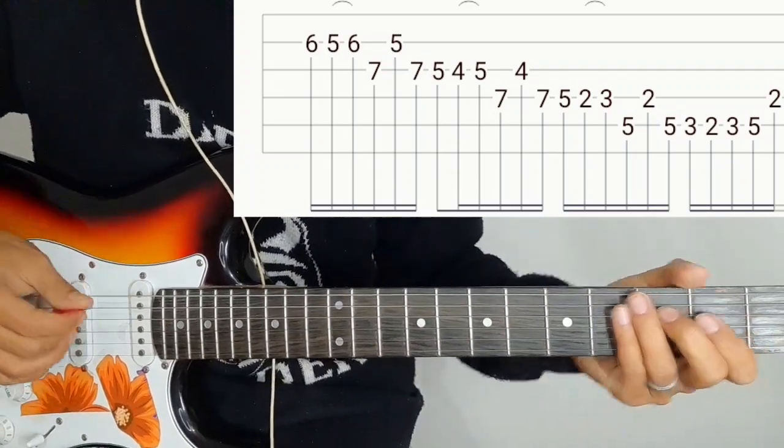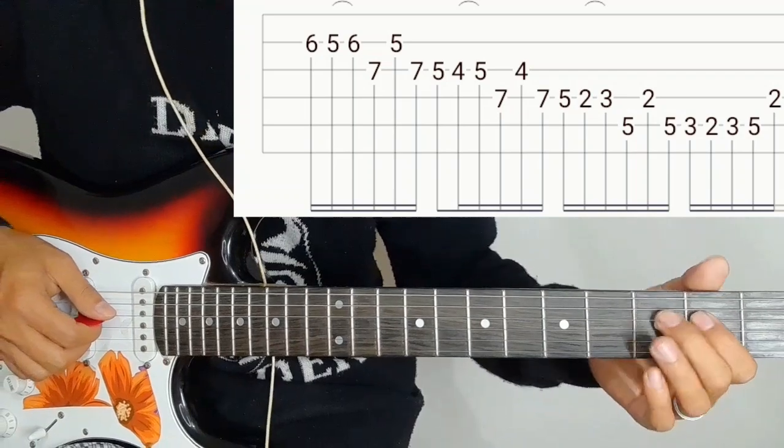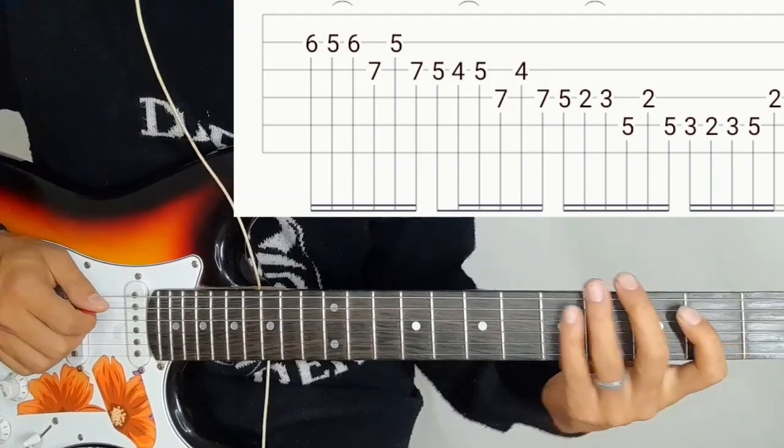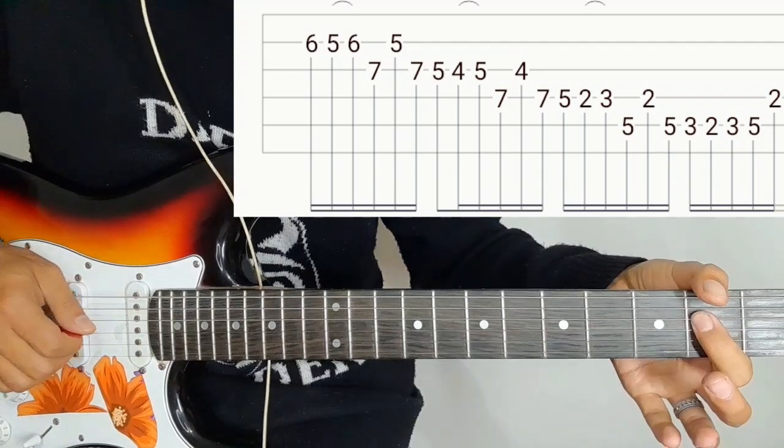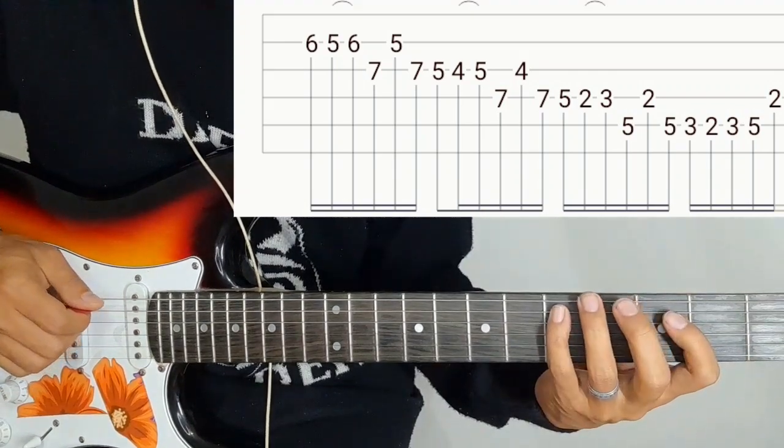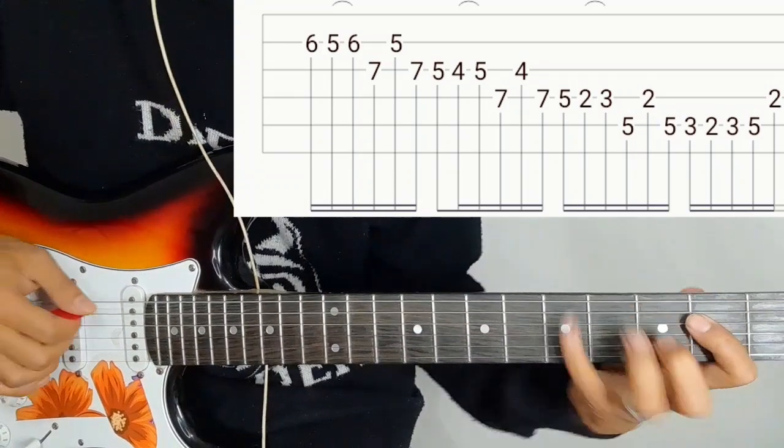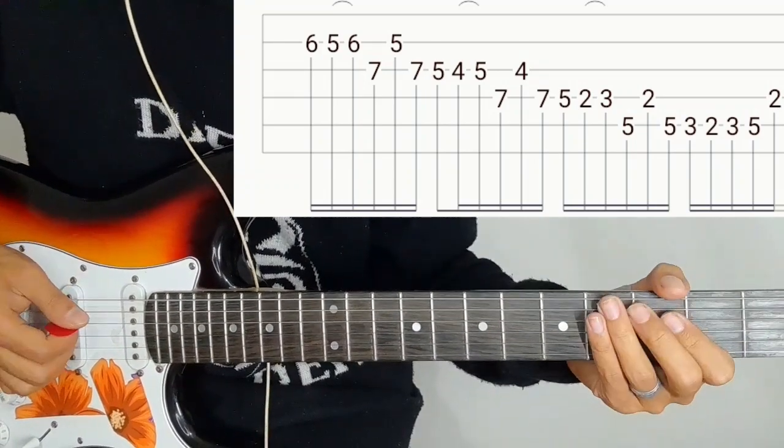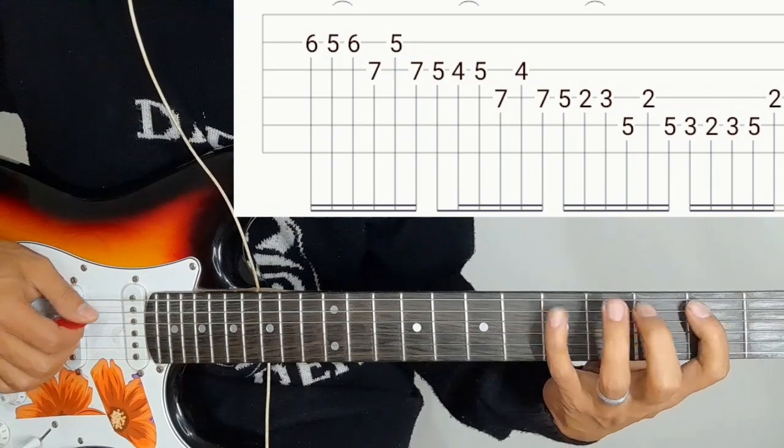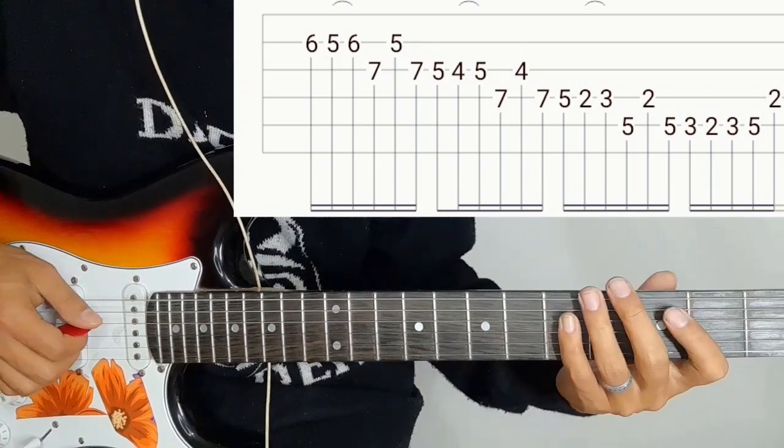4th string 7-5, then 4th string 2-3 with hammer-on. Then 5th string 5, 4th string 2, 5th string 5-3. After this, 5th string 2-3-5, and 4th string 2 with bending.